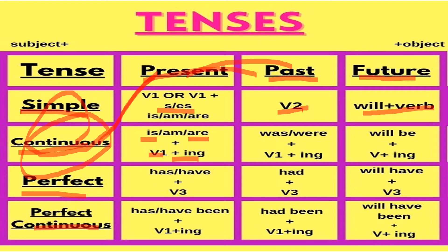In past continuous tense, we use 'was' or 'were' with the ing form of the verb. For example: she was going to school, we were going to school. Remember: continuous always means ing — verb with ing. With singular we use 'was,' with plural we use 'were.'